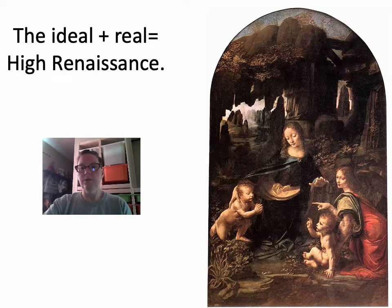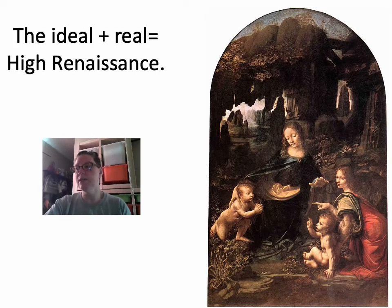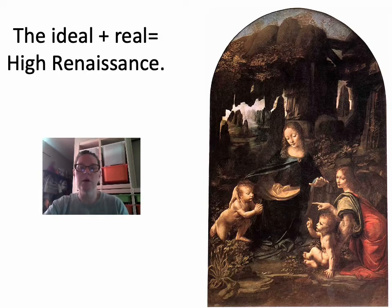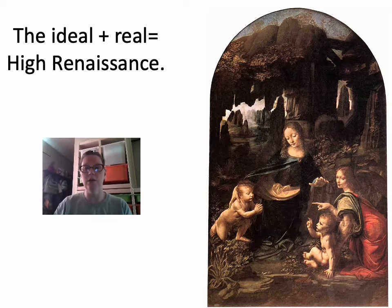Typically we can break down each style by listing the stylistic characteristics of the era. For example, we know that High Renaissance art in Italy is characterized by two major elements: the idealistic and the realistic. So idealism plus realism equals High Renaissance.